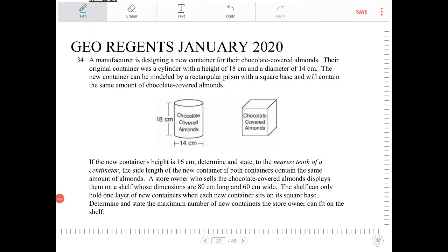The manufacturer is designing a new container for their chocolate-covered almonds. Their original container was a cylinder with a height of 18 centimeters and a diameter of 14 centimeters.